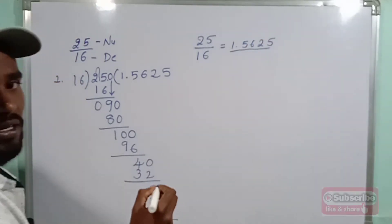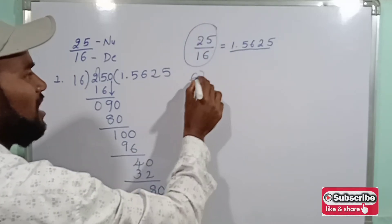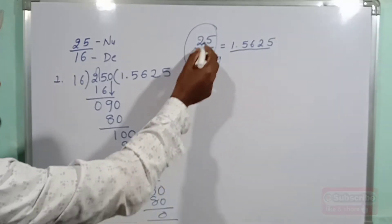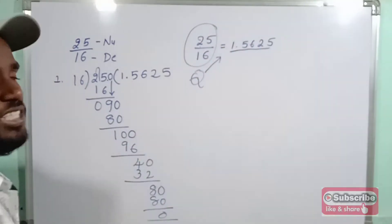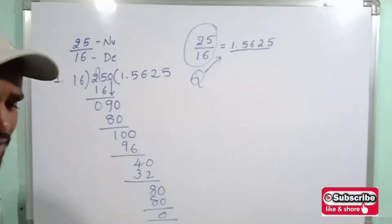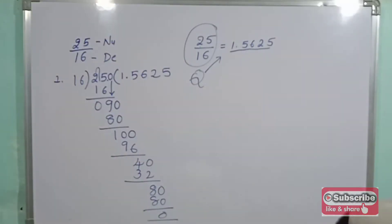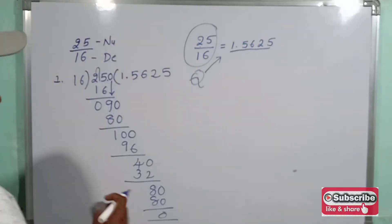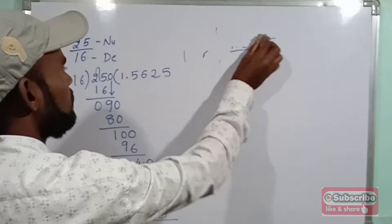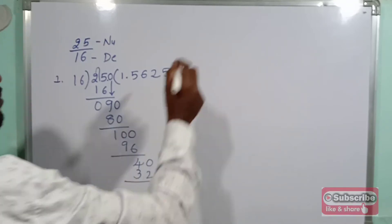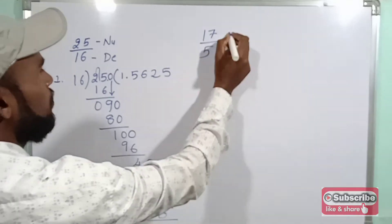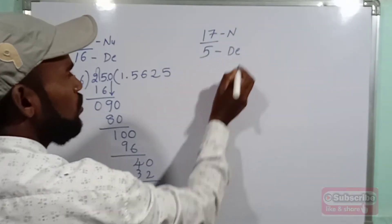So 25 by 16 can be written as 1.5625. This is the decimal representation of the rational number 25 by 16. Now let us take one more example: 17 by 5.